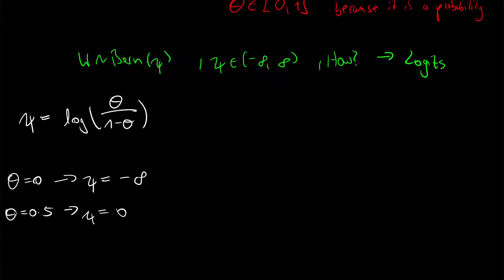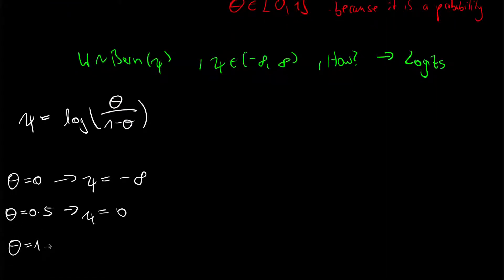If theta is 1, so we have 100% chance of good weather, then our psi is 1 over 1 minus 1, which is 0. 1 over 0 is plus infinity, and the logarithm of plus infinity is plus infinity.